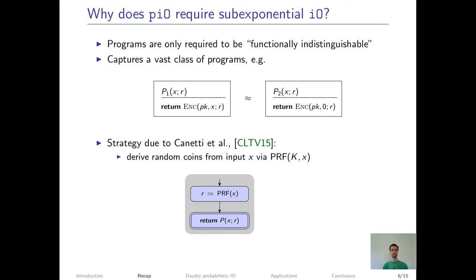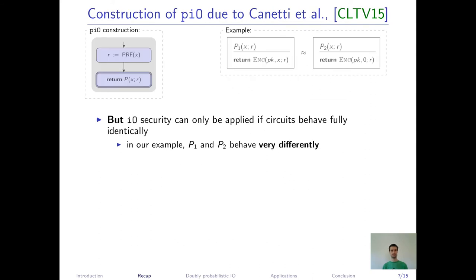At TCC 2016, Canetti, Lin, Tessaro and Vaikuntanathan constructed probabilistic I.O. Their strategy is to first make the randomized program deterministic by deriving its random coins via a PRF from its input and then use I.O. to obfuscate this deterministic program. But I.O. security can still only be applied if the programs behave fully identically. In our example, P1 and P2 behave very differently and might even have disjoint output domains. So direct reduction to I.O. just can't work.